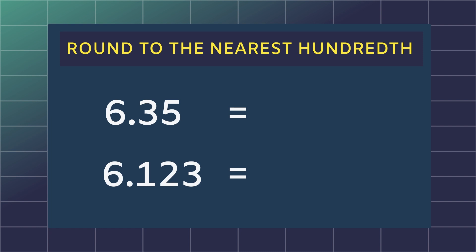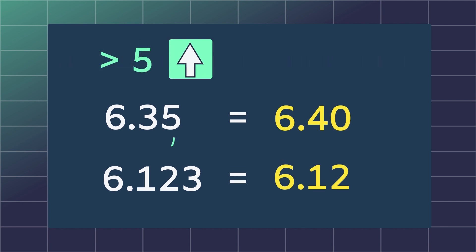For 2 or 3 decimal places, apply the same method and remember to look at each place value. More than 5, let it rise. 4 or less, let it rest.